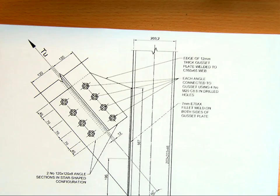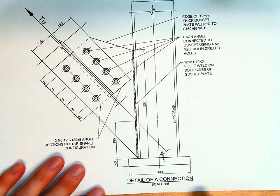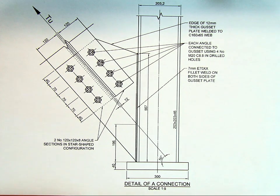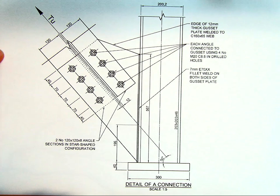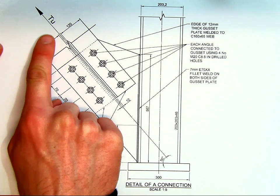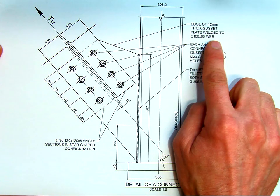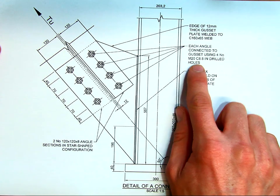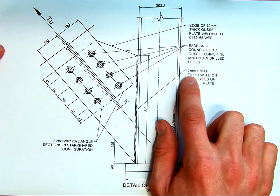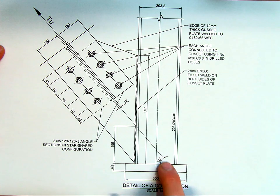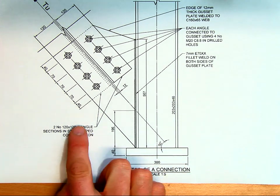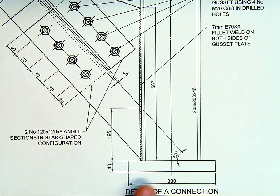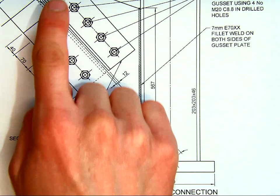Looking at the diagram, make sure you have a copy of these notes. Here we've got a column at 203x203x46 with a base plate below with a star shaped angle. So it's an angle each side connected to this gusset plate pulling on it. So there's our force Tu. And then edge of 12mm thick gusset plate welded to the column. Each angle connected to gusset plate using M20 in drilled holes. And then we've got 7mm welds each side. And then this is all applied at an angle of 50 degrees.